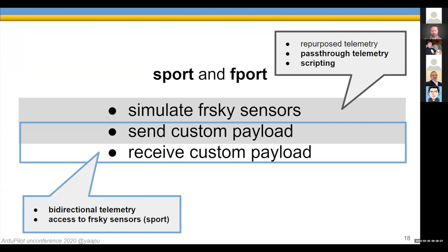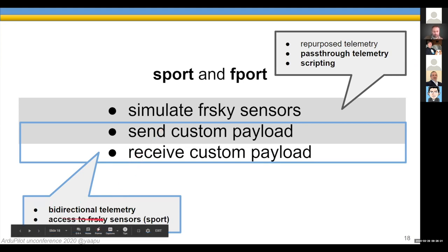We can simulate FRSky sensors, send custom payload, and receive custom payload. We'll see scripting support using these two strategies — simulation of FRSky sensors and custom payload. By sending and receiving custom payload, we'll achieve bidirectional telemetry. There's also an extra option of using external FRSky sensors, which I'll discuss at the end — something I haven't tried yet but should be doable.